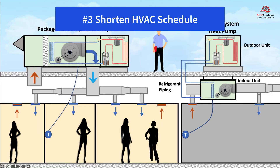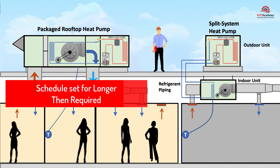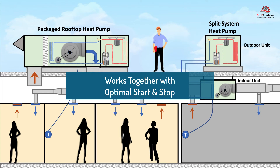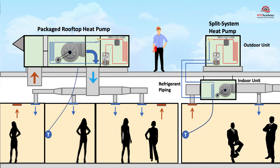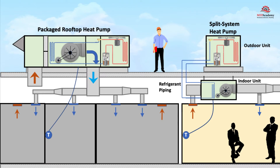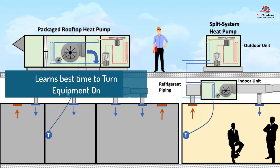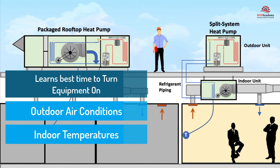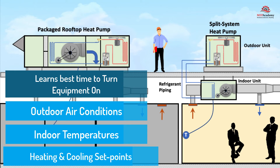Number three: shortened HVAC schedule. HVAC schedules are often set for longer time durations than actual occupants require. Shortening the HVAC schedule works well with an optimal start and stop control strategy. This strategy avoids turning on HVAC equipment before it is needed and quickly turns it off when occupants are not scheduled to be in the building. The building automation system learns with historical trending data when it's the best time to turn equipment on, using outdoor air conditions, indoor temperatures, and setpoints for heating and cooling during occupied mode.